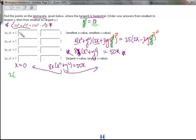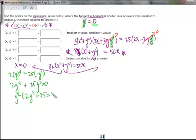2(0 + y²)² is just y to the fourth, equals 25(0 - y²). If we bring everything over to one side, we have 2y⁴ + 25y² = 0, and we have y²(2y² + 25) = 0.